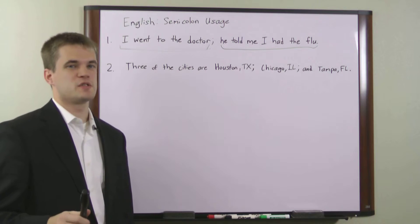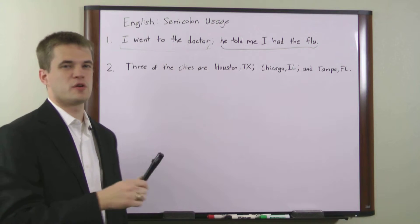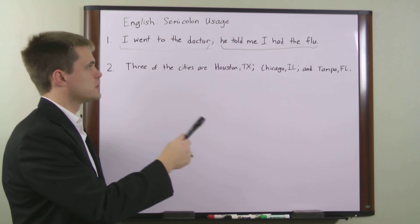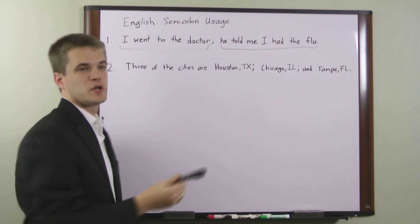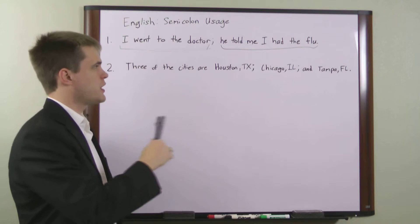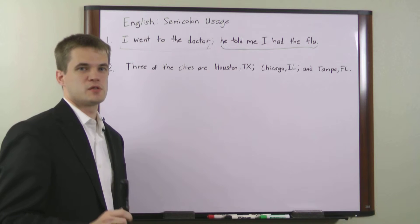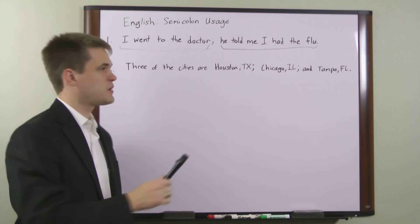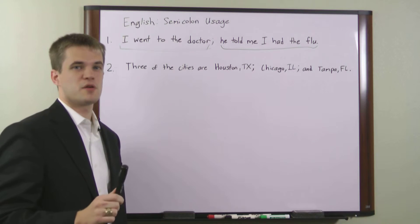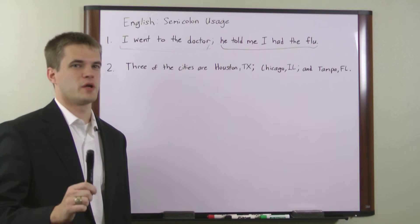You would not, for instance, be able to use a semicolon in a situation where your two clauses were 'I went to the doctor' and 'I scored a 99 on my exam,' because they're not related in the same way. So in order to use a semicolon to separate two independent clauses, the two clauses must be very closely related to one another.